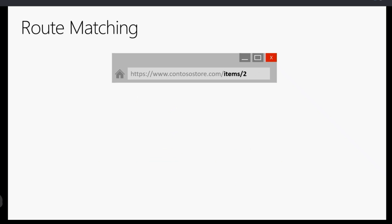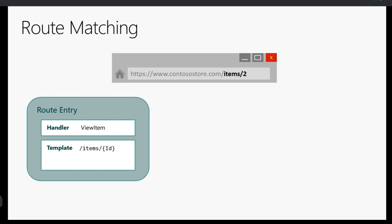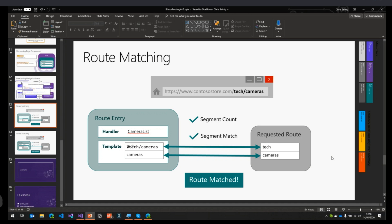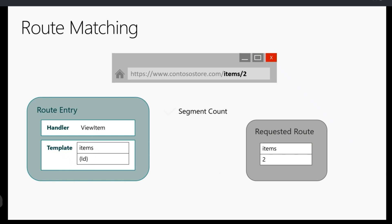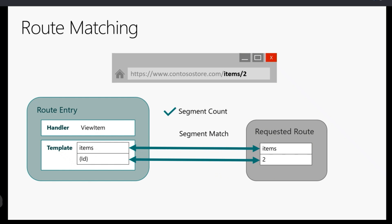With route parameters, navigating to /item/2 against a template like /item/{id} breaks into segments 'item' and '{id}'. The segment count matches. 'item' string-compares successfully. For the route parameter {id}, the router pushes whatever value is in that segment of the requested route into the parameter — in this case '2'. The route matches and the ViewItem component is loaded. I'll cover route parameters in more detail in the demos.